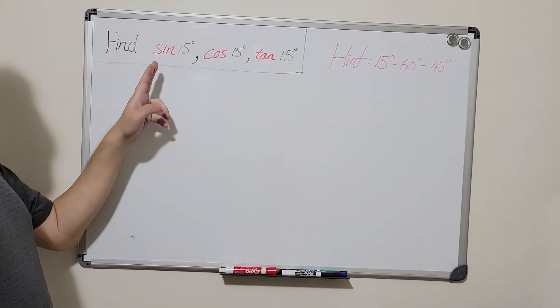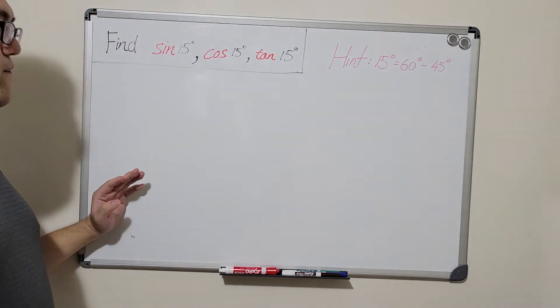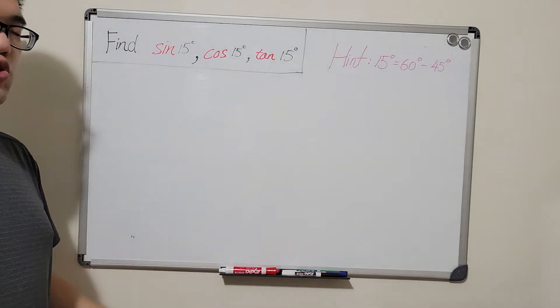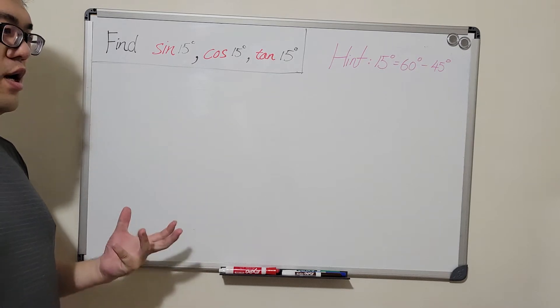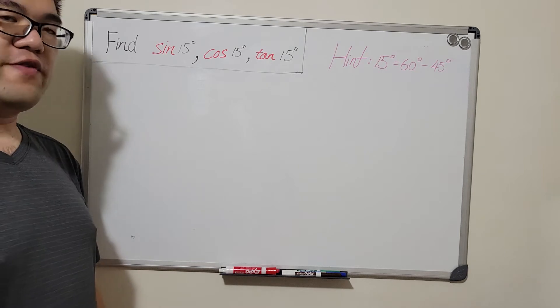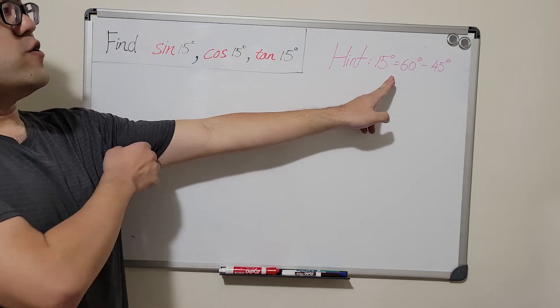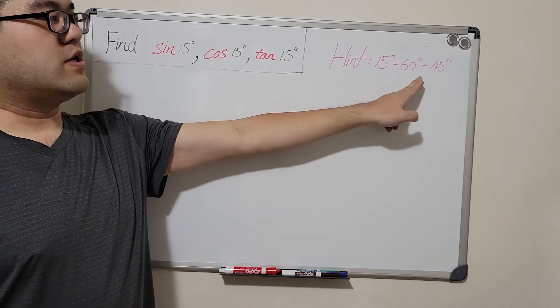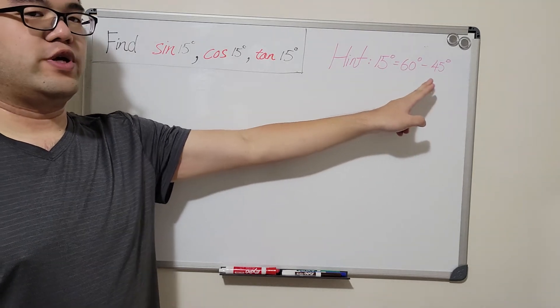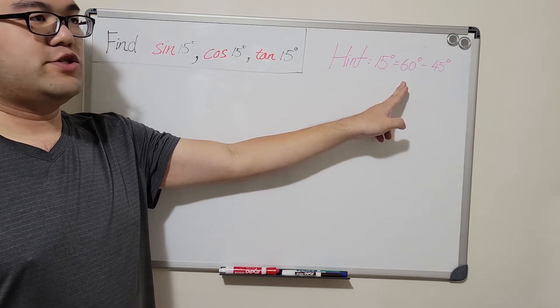we're going to find out the values of sine, cosine, and tangent of 15 degrees using a geometrical way, meaning we're not going to use any trig identities. Instead, we're trying to draw some pictures and get right triangles of the form 15, 75, and 90 degrees. We're going to use the following hint: notice that 15 degrees equals 60 degrees minus 45 degrees, which are two right triangles we are very familiar with from geometry class.